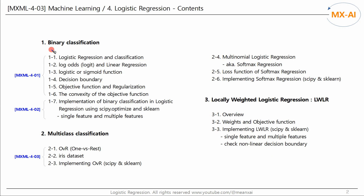In the last two videos, we looked at binary classification. In this video, we will look at multi-class classification. First, let's look at the OVR 1 versus REST method, and let's implement this using scikit-learn's logistic regression library.